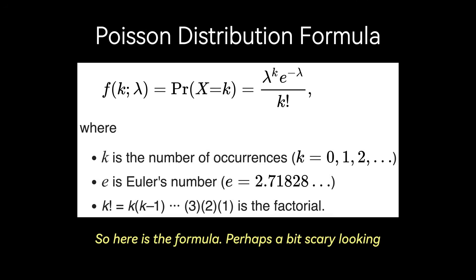So here is the formula, perhaps a bit scary looking. This is the probability we want to calculate, the probability that the random variable X, which represents the number of events, is equal to a specific count k. k is the number of occurrences of the event you're interested in. It's a non-negative integer. For example, what's the probability of exactly three calls? Here we can set k equals 3.